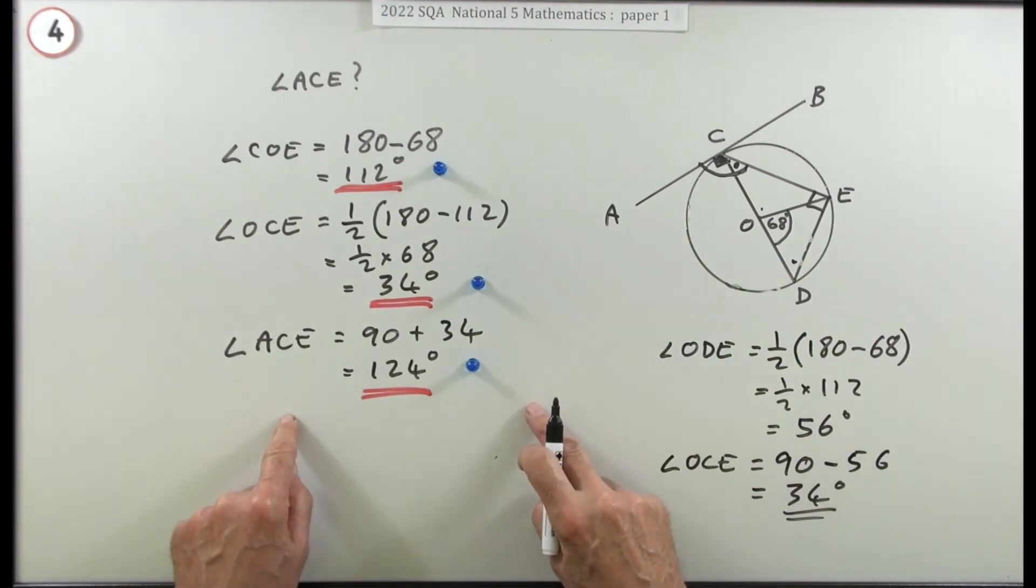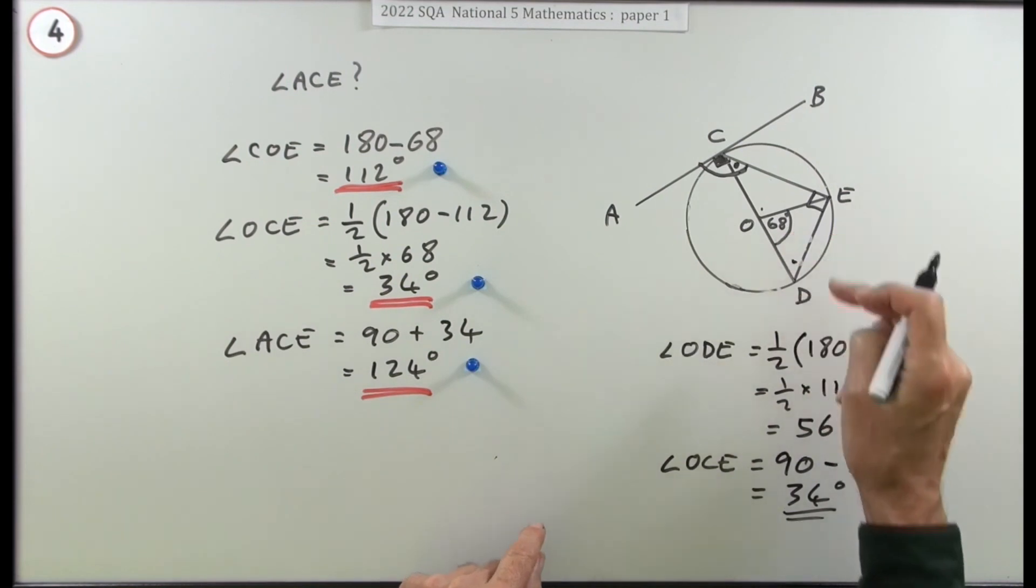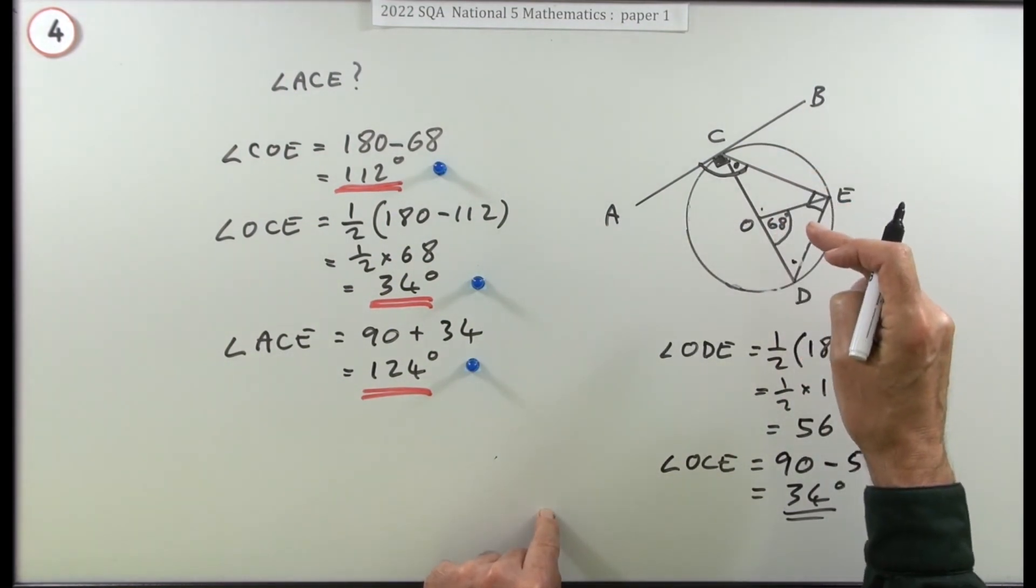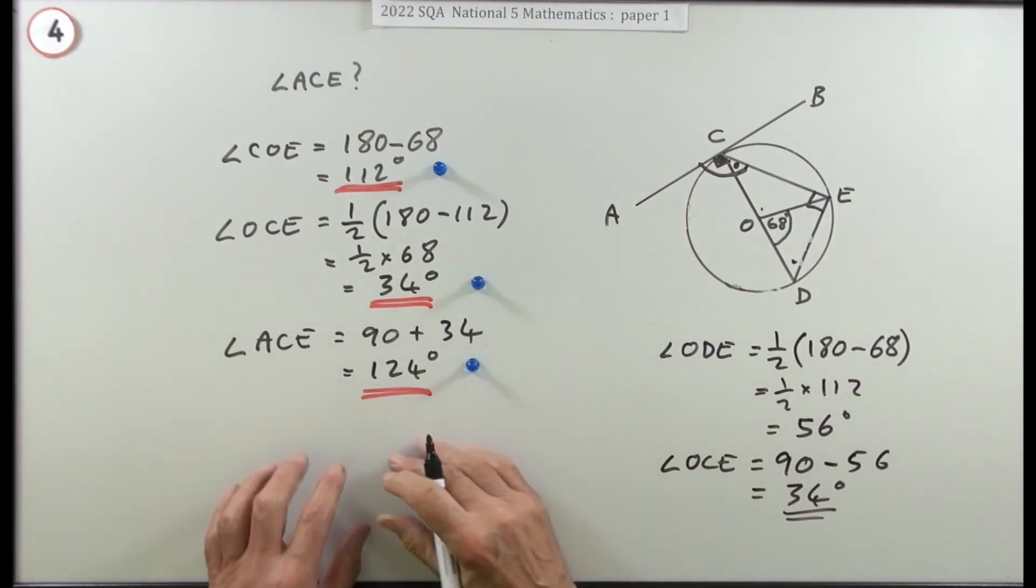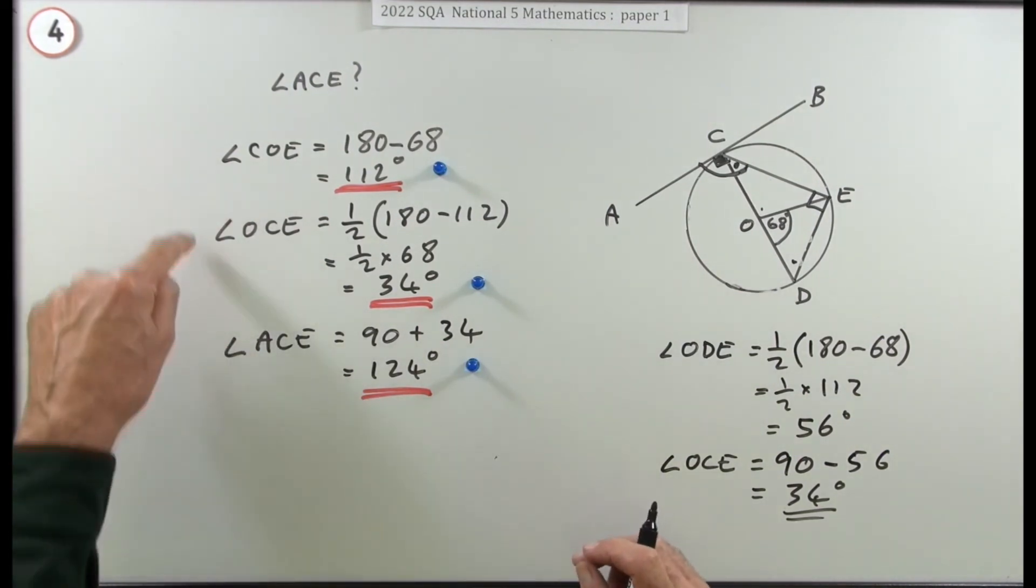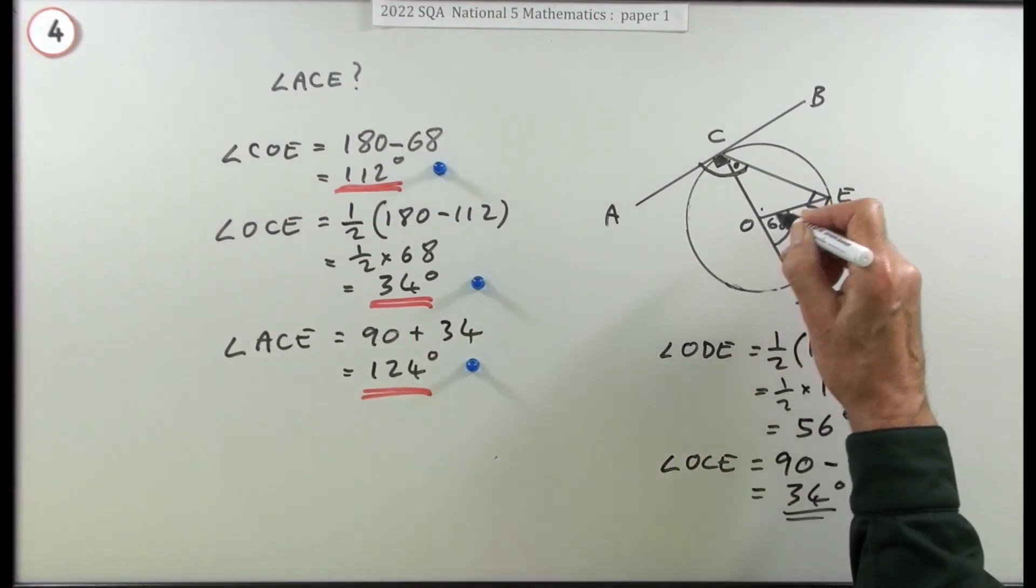But what you can't do is just do it all in your head. You know the way you could have done quite easily - I would have just said well that's 68, so that's half of it, that's 34, add on 90, that's 124. Put down 124 - no marks. No working, no marks. So you have to have working, either this, which is sort of the rigorous way of doing it, or just filling the angles in the diagram.